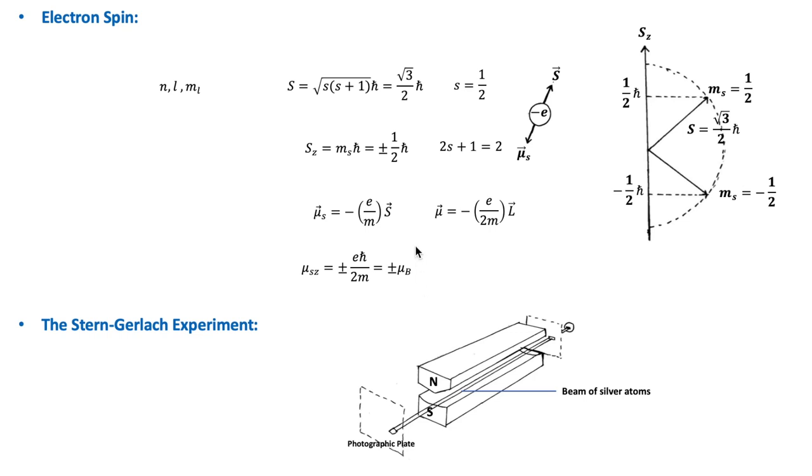From space quantization, you can see that there are two possible components of mu s along any axis, such as, for example, the z axis, which are mu spin z is equal to plus or minus e h bar over 2m, so plus or minus Bohr magneton.